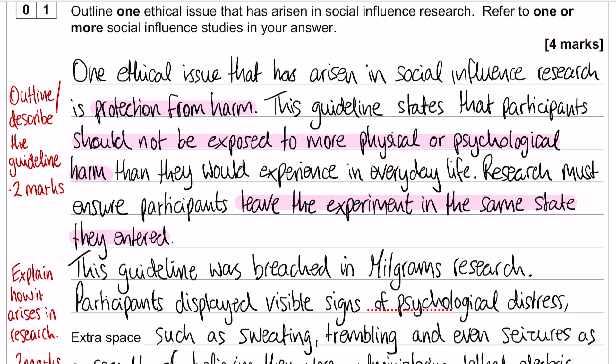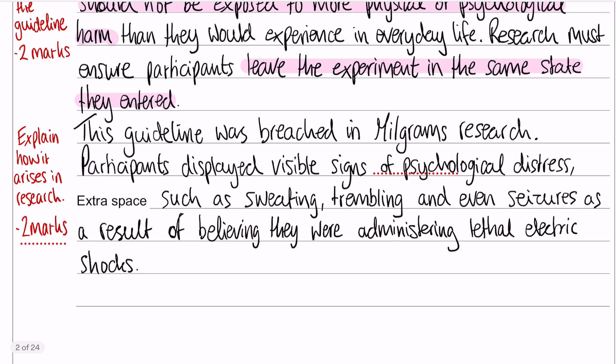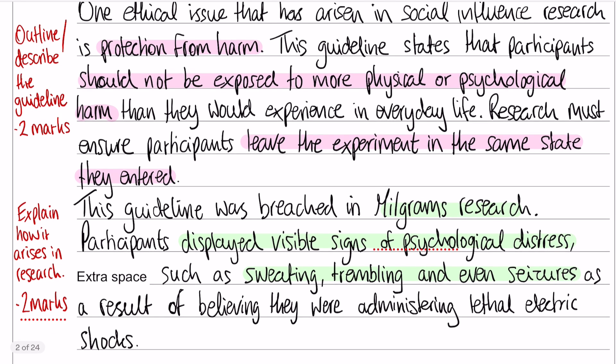If we're going to apply it to a piece of research, we can use Milgram because that's always a nice one to talk about for any ethical issue. The guideline was breached in Milgram's research because participants displayed visible signs of psychological distress, such as sweating, trembling, and even seizures as a result of believing that they were administering lethal electric shocks. Make sure you are telling the examiner how we know that participants are suffering from psychological damage, rather than just allowing the examiner to infer meaning from what you've written.